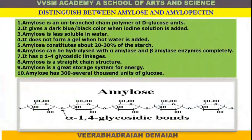Amylose is an unbranched chain polymer of D-glucose units that turns dark blue-black in color when iodine solution is added. It is less soluble in water and does not form a gel when hot water is added. It constitutes about 20% to 30% of starch and is hydrolyzed completely by amylase and beta-amylase enzymes. It has 1,4 glycosidic linkage, a straight chain structure, and serves as a great storage system of energy with several hundred to thousand units of glucose.